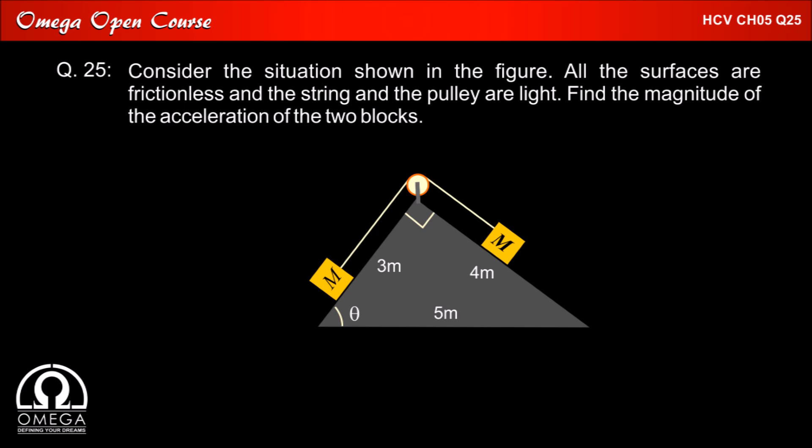Let the incline on the left make angle theta with the horizontal. Then the incline on the right will make an angle 90 degrees minus theta with the horizontal.